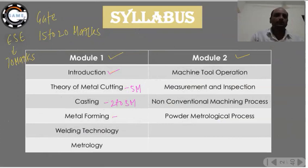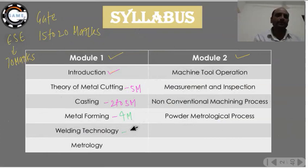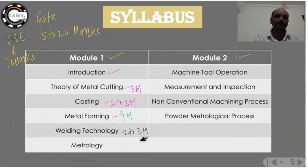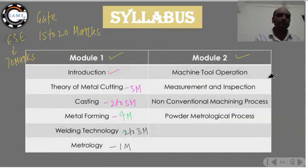Welding technology covers around 2 to 3 marks. So most of the questions are asked from module one, while module two covers around 3 to 4 marks. We will focus more on module number one in this course.